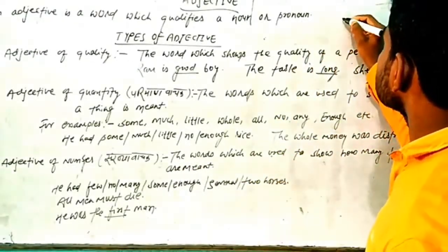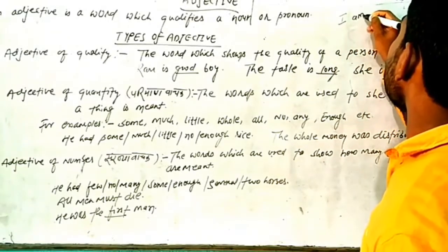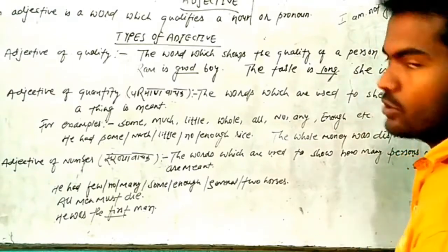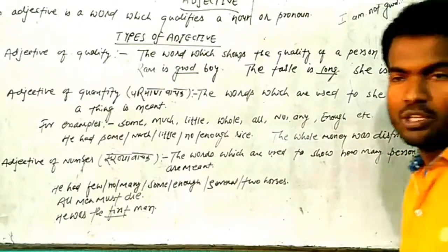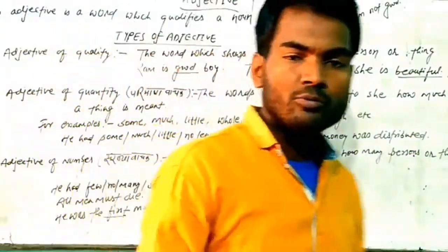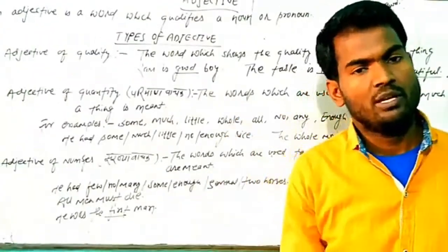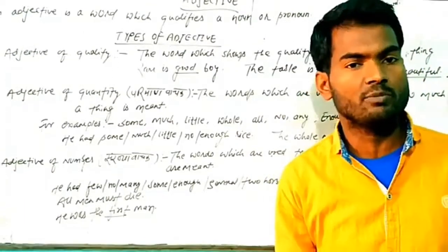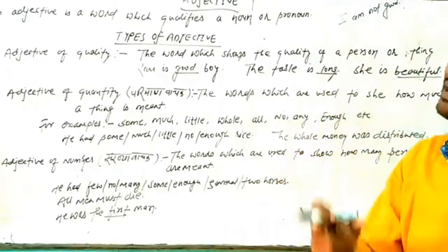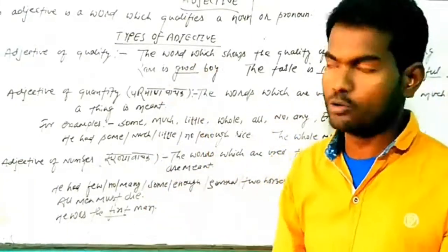See, agar main bola, I am not good. Qualify karne ka matlab kya hota hai? Ki chahe wo gul mein ho, chahe wo augul mein ho, bad mein ho ya good mein ho, merit mein ho ya demerit mein ho. Kisi bhi tarike se usko qualify karna chahe, either that is noun or pronoun.